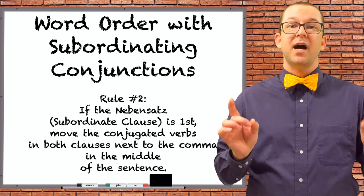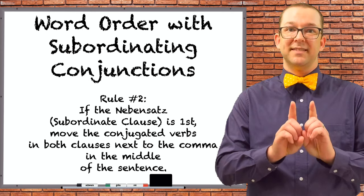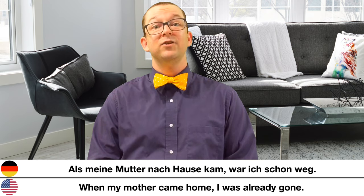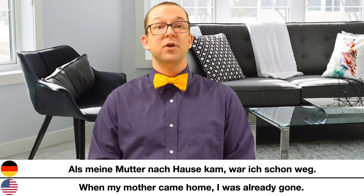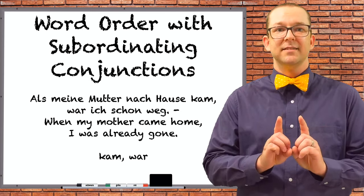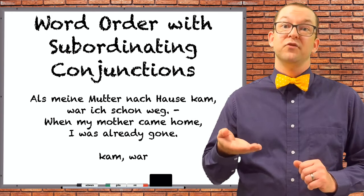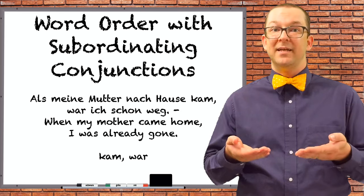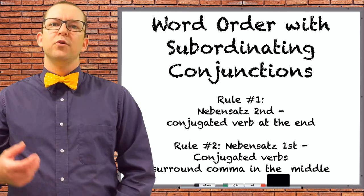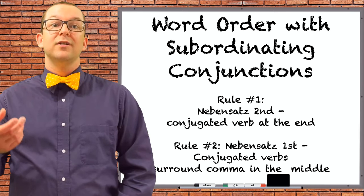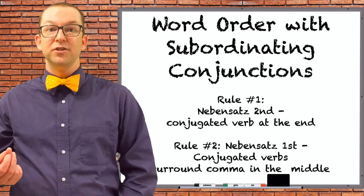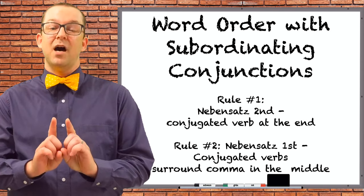Word order rule number one: when the Nebensatz is second, put the conjugated verb at the end of that clause. The word order for the Hauptsatz is not affected. Word order rule number two: when the Nebensatz is first, put the conjugated verbs of both clauses in the middle of the sentence next to the comma. For example: 'Als meine Mutter nach Hause kam, war ich schon weg.' — When my mother came home, I was already gone. Notice that 'kam' and 'war' are on either side of the comma. I usually refer to this as a verb cluster around a comma.